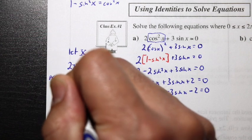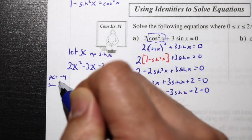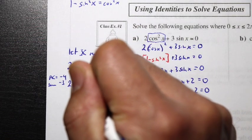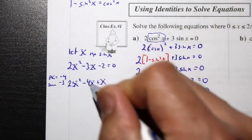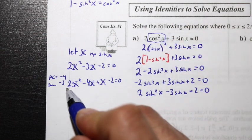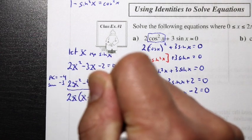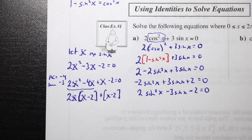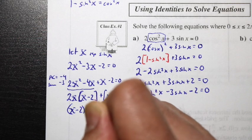Using the AC method: a × c = 2 × (-2) = -4. We need a product of -4 and a sum of -3, so -4 and +1 work. Splitting: 2x² - 4x + x - 2 = 0. Factoring by grouping: 2x(x - 2) + 1(x - 2) = 0, which gives (x - 2)(2x + 1) = 0.